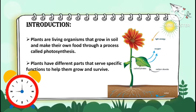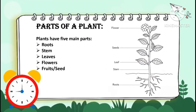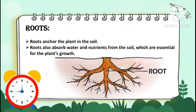Parts of a plant: plants have five main parts — roots, stem, leaves, flowers, fruits, and seeds. Roots anchor the plant in the soil. Roots also absorb water and nutrients from the soil, which are essential for the plant's growth.